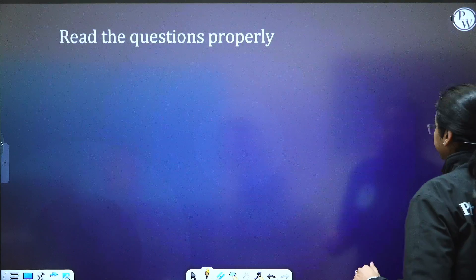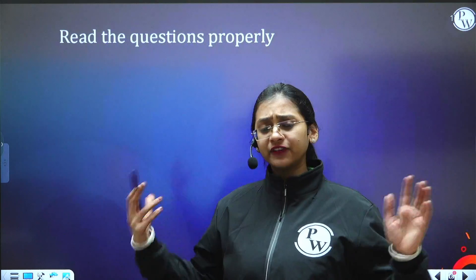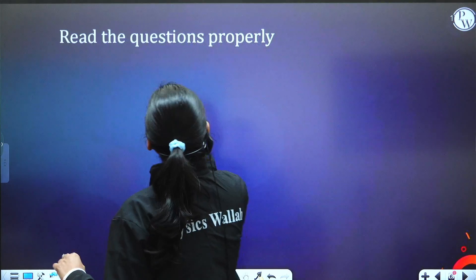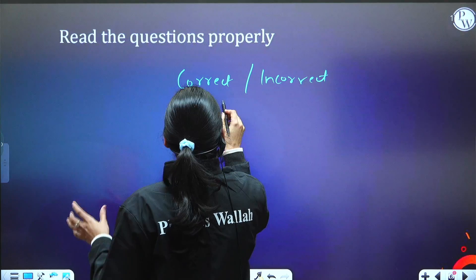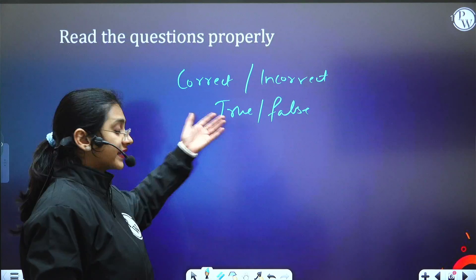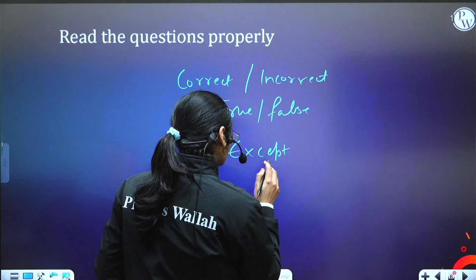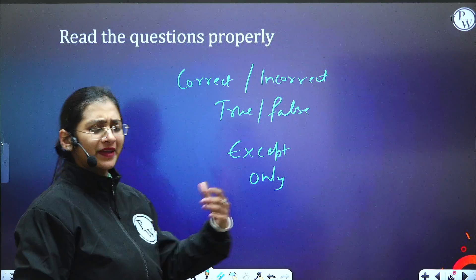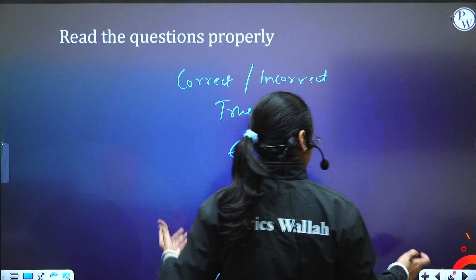So what is the very first tip? This is an essential tip: when it comes to any question, whether you know the concept or not, read the question properly. There are a lot of students who by mistake read 'correct' as 'incorrect.' You should read words like correct, incorrect, true, false, except, and only very carefully. There is a high chance of mistaking these words, so you have to understand the question properly — whether you are guessing or answering from conceptual knowledge.